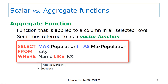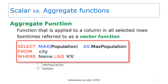In contrast to a scalar function, SQL also has aggregate functions. An aggregate function is applied to a column in all of the selected rows. The value that is returned from an aggregate function depends upon the column value that is in all of the selected rows. Keep in mind, a scalar function only works with a column value for a row. Scalar functions do not consider values in other rows to get the result.